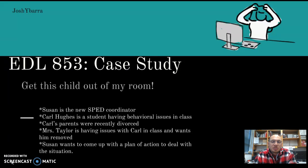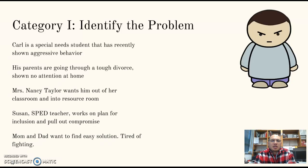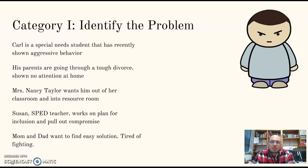In category one — identify the problem — Carl is a special needs student showing very aggressive behavior towards the teacher. He's thrown rocks at teachers as well, though it hasn't branched out to other students yet. The parents are going through a heated divorce. Mrs. Taylor wants him placed in the resource room immediately; she's afraid things will escalate and she can't physically control him.